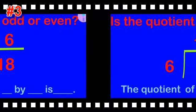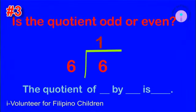Kindly repeat. Item number three: is the quotient odd or even? The quotient of six by six is odd.